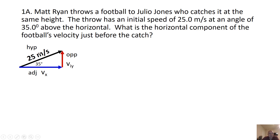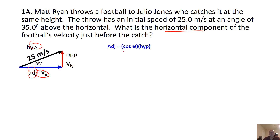You have to draw a quick picture of what's going on. You have 25 meters per second at a 35-degree angle above the horizon, and they're asking you for the horizontal component. So this is going to be important — what the question is actually asking for. You have an adjacent and a hypotenuse, so that's going to lead you to adjacent over hypotenuse — it's going to be a cosine function.